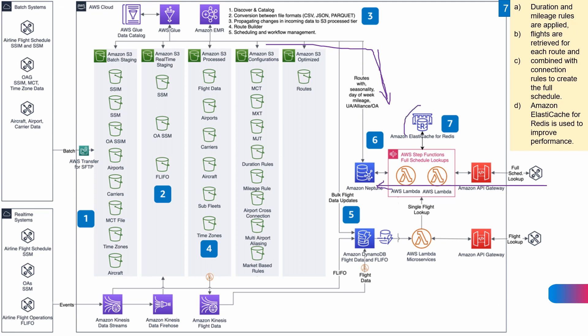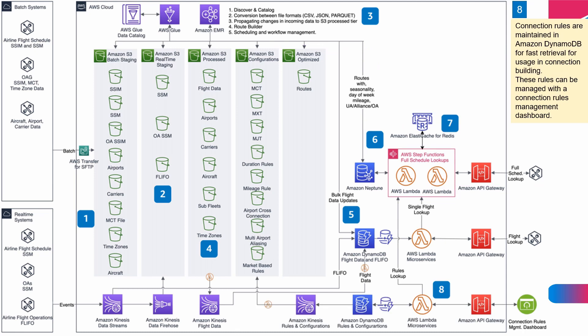To improve performance, Amazon ElastiCache for Redis is used. We can have a connection rule management dashboard to set connection rules — like showing our airline's connecting flights first and partner flights next. These rules are saved in DynamoDB and S3 configuration buckets, and can be combined when needed.